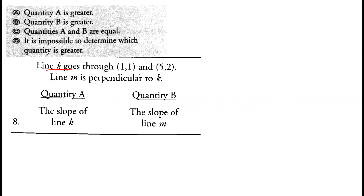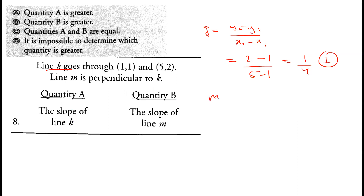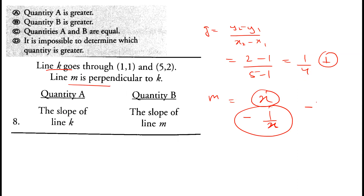Line k passes through (1,1) and (5,2). Using the gradient formula (y₂−y₁)/(x₂−x₁), the slope is (2−1)/(5−1) = 1/4, which is positive. Line m is perpendicular to k. If a line has gradient x, its perpendicular has gradient −1/x. So the perpendicular gradient to 1/4 is −4, which is negative. Since positive is greater than negative, option A is correct.